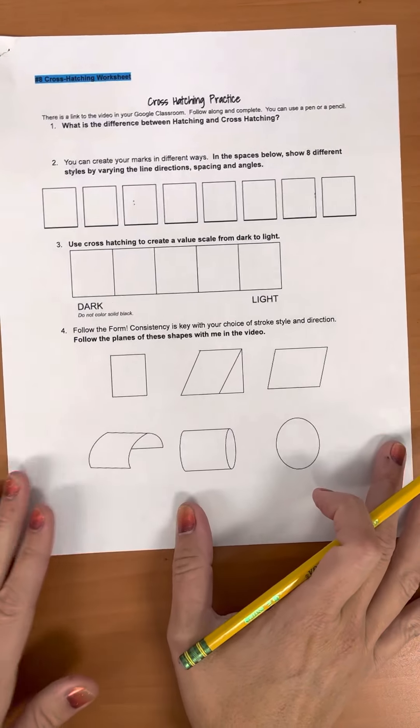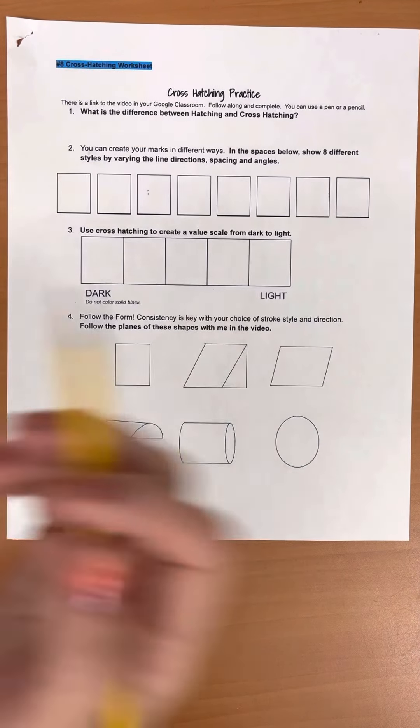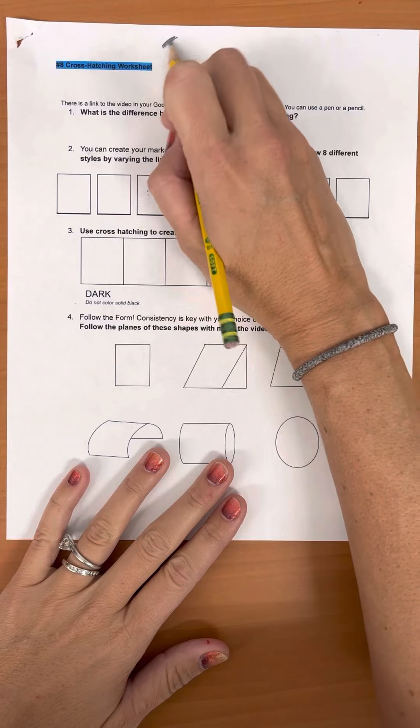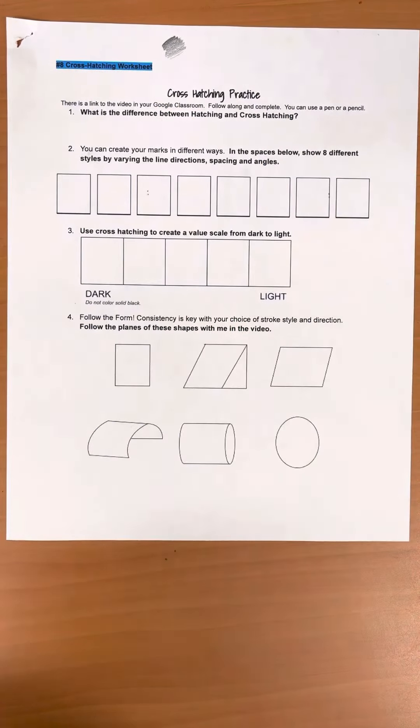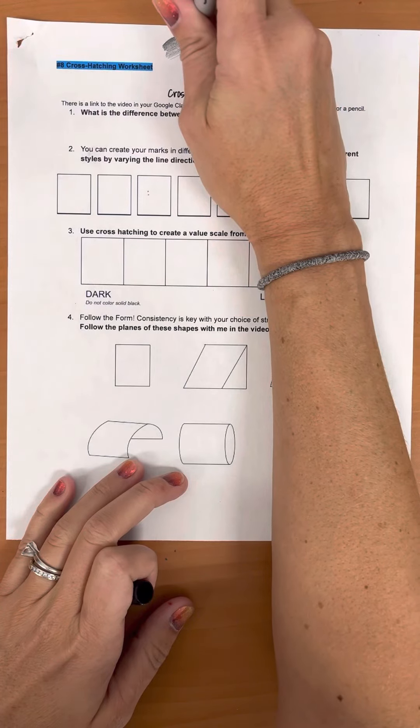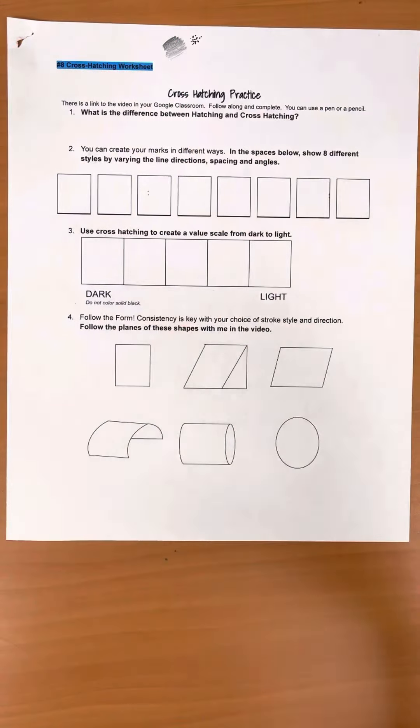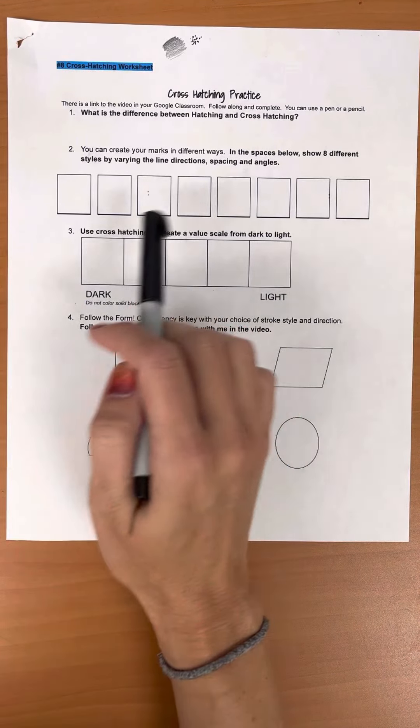So today you're going to practice a style of shading called cross hatching. We have worked with traditional shading where you just change your pressure with a pencil to fill in solid areas of value. You have practiced stippling where you space and place your dots to create areas of value, and now we're going to do a technique called cross hatching.